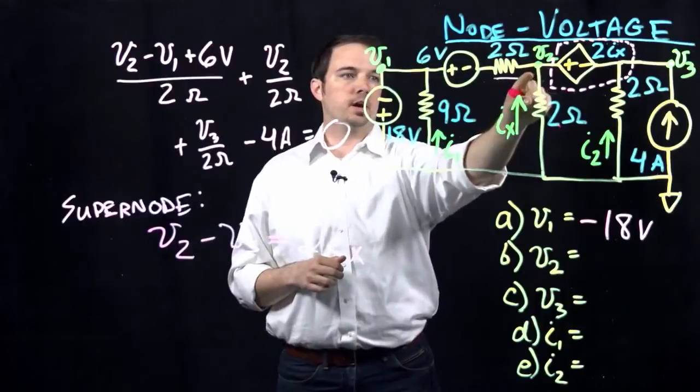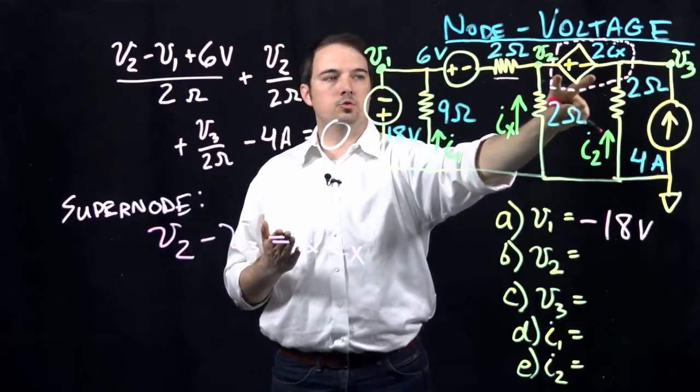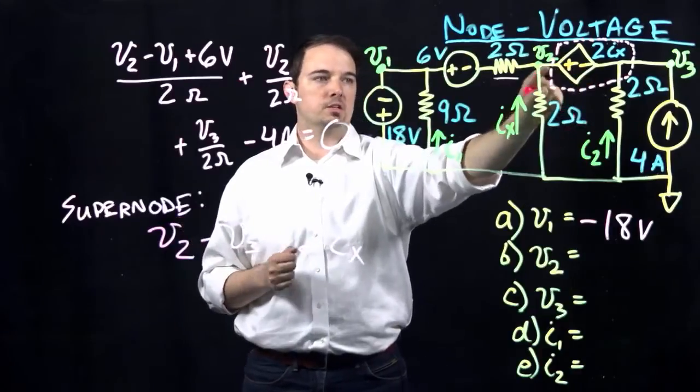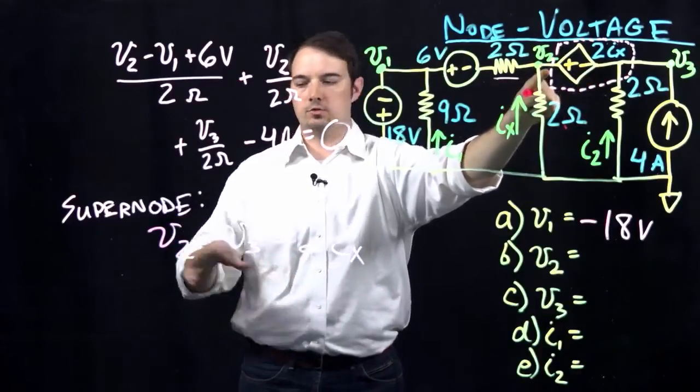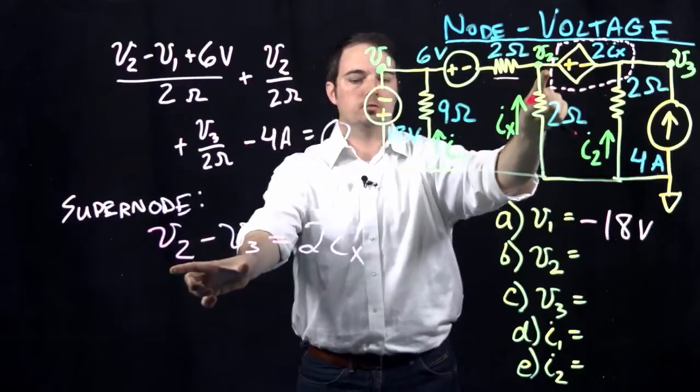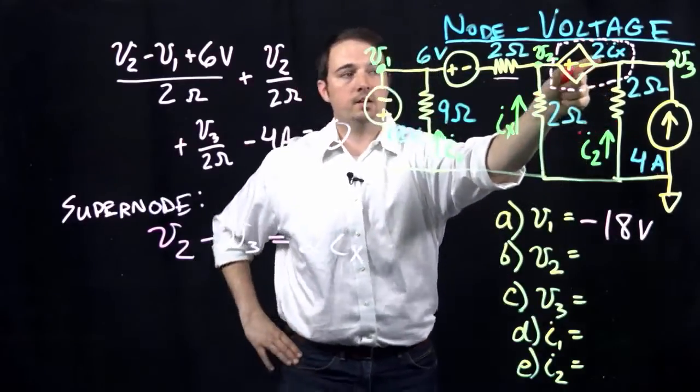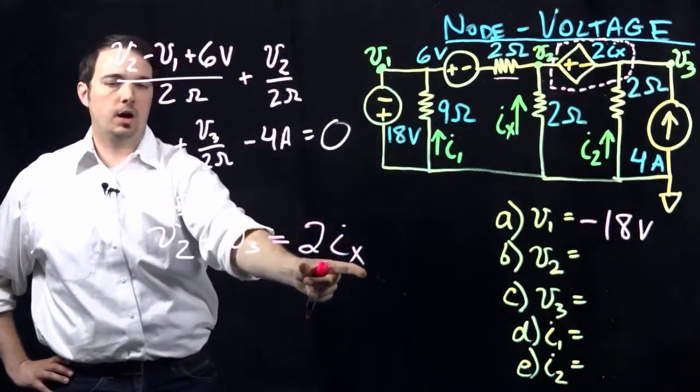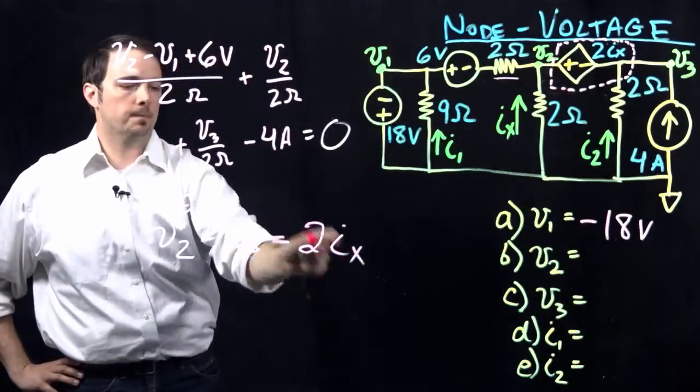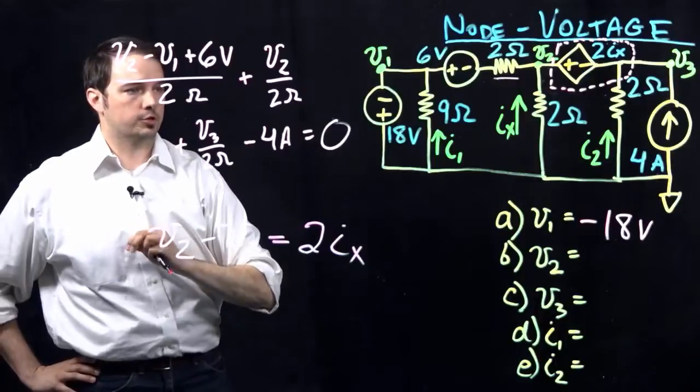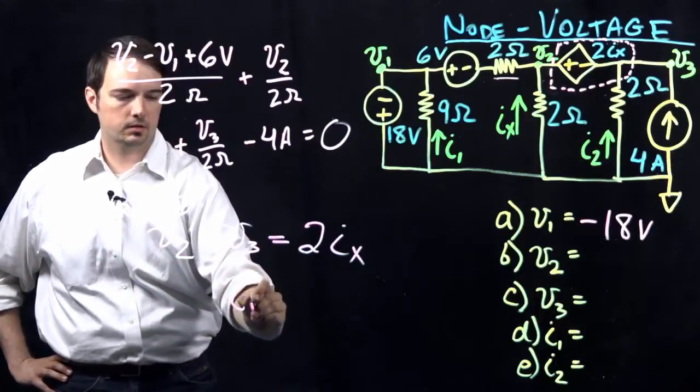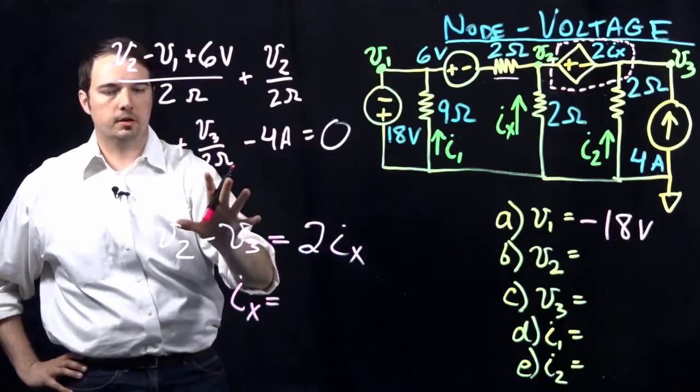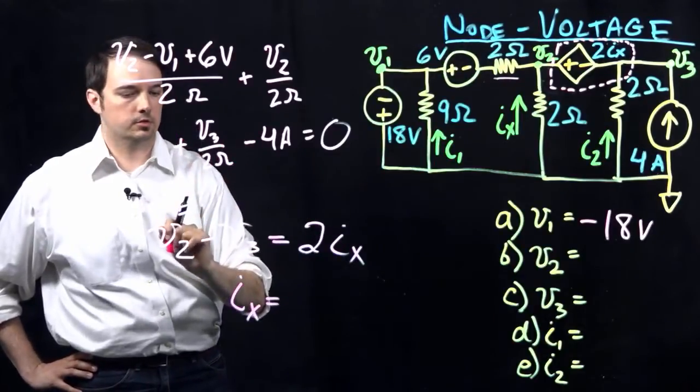Because again, I'm just looking at the polarity of this source, whether it's a dependent source or independent source. I see that the positive terminal is connected to the V2, so that's why I'm saying V2 minus V3 is equal to the quantity of that independent source is 2 times IX. So, that's where my 2IX is coming from right here. And then the final thing we would just need to note is how do we know what IX is? Because that's an unknown and we need to keep everything reduced so we have a minimum amount of unknowns in our equations.